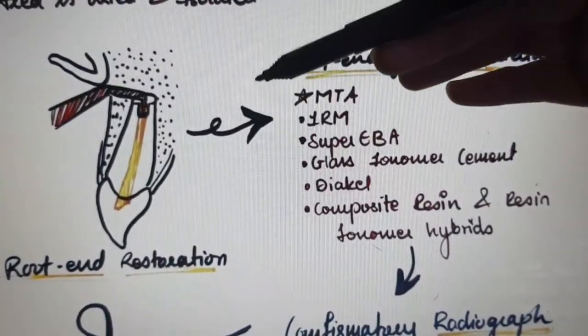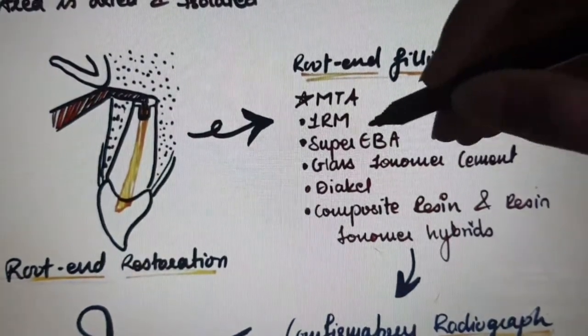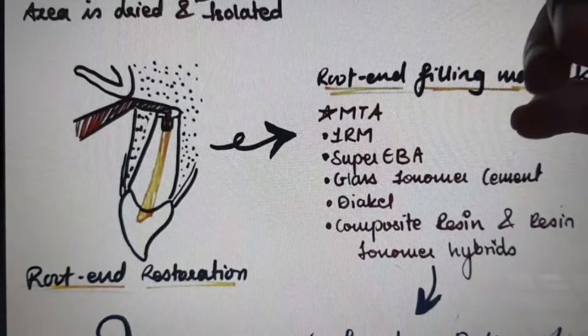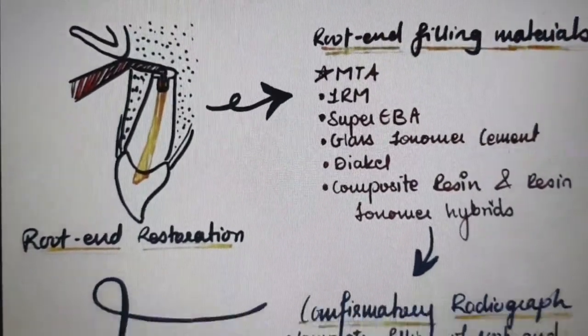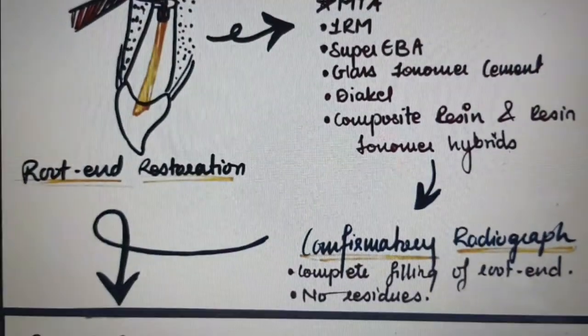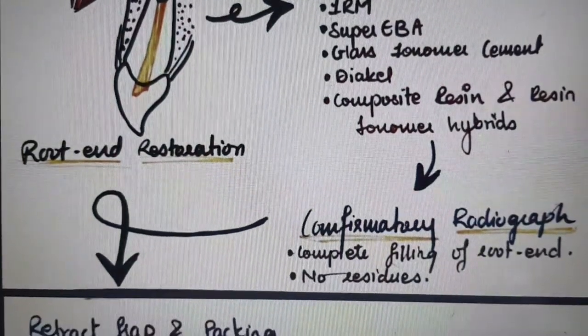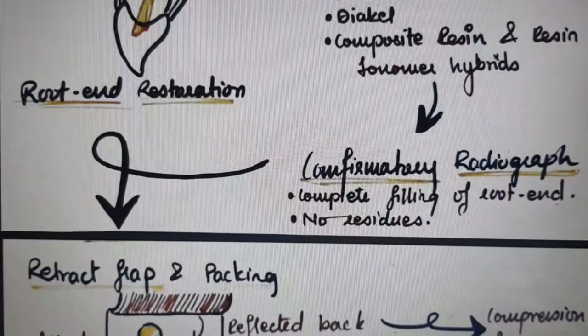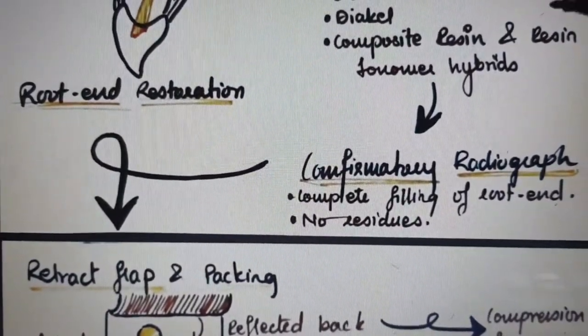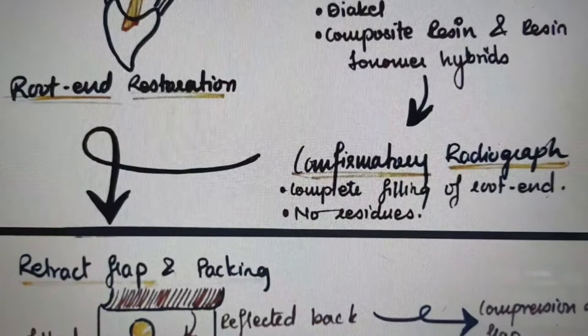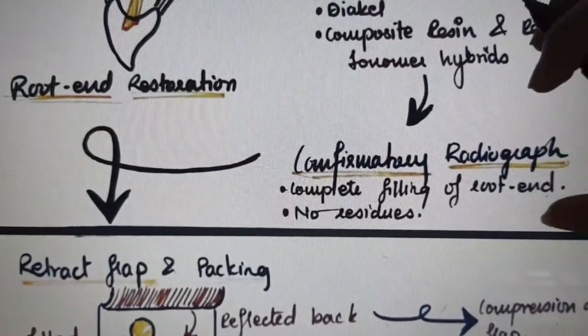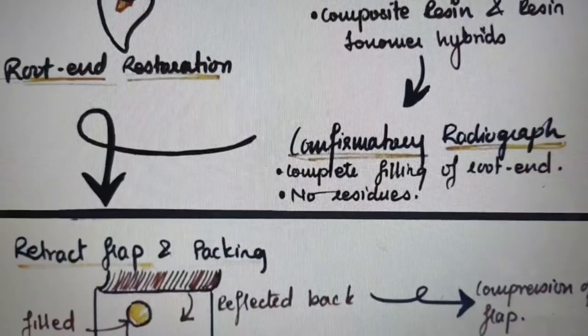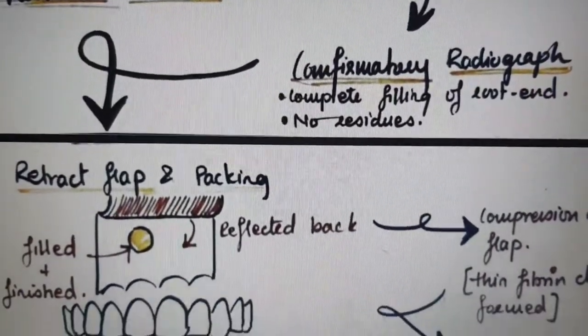Once the root end is prepared and restored, we take a confirmatory radiograph to check if all steps are properly performed and to check if any debris are left. If debris are left, the step is repeated. Once everything is fine, we burnish the end to a concave finish before approximating the retracted flap. After confirmatory radiograph, some hemorrhage may occur before suturing is attempted.